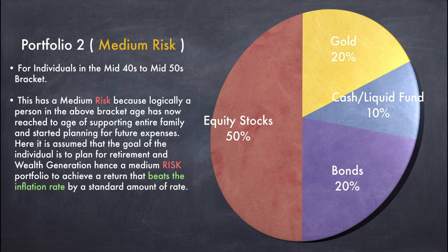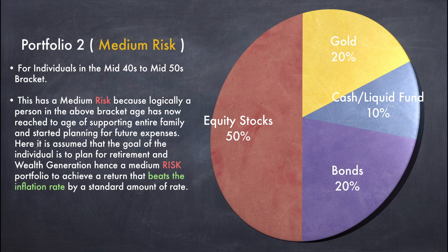Portfolio 2 is a medium risk portfolio for the mid-40s to mid-50s bracket. These people should think about wealth generation rather than wealth creation. The best way to do that is investing 50% in equity, which allows them to beat the inflation rate and gain a standard rate of return. Then 20% in gold to secure their fund in case the market collapses, 20% in bonds — you can invest in government bonds or company bonds through the market itself — and 10% in cash, kept aside so that if equity stocks fall you can use that cash to buy more shares at a lower price.